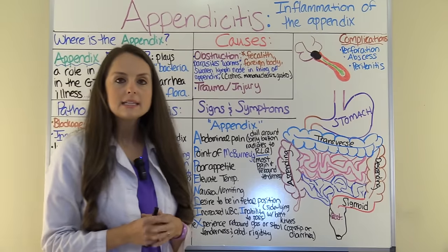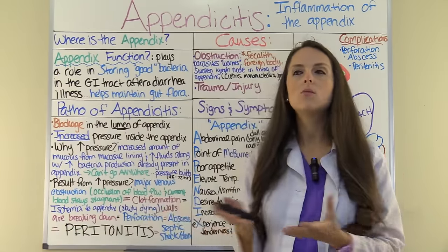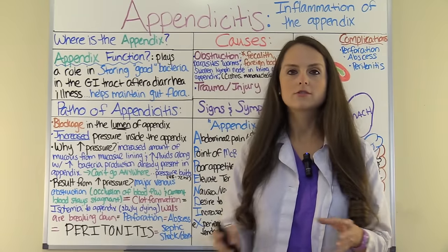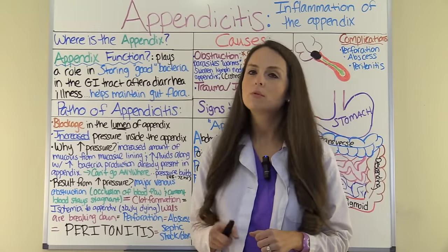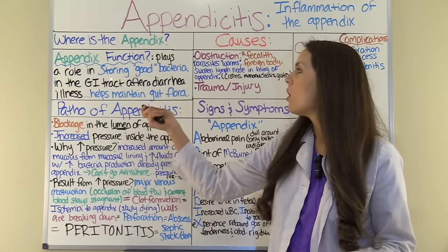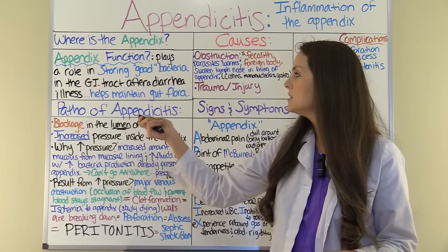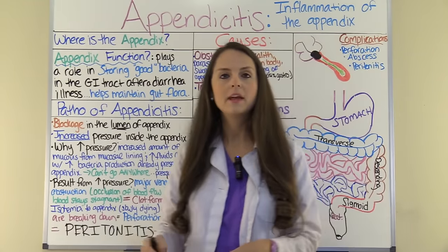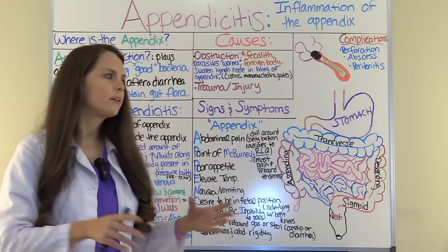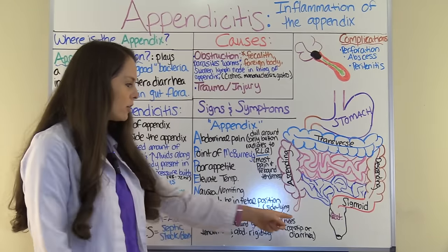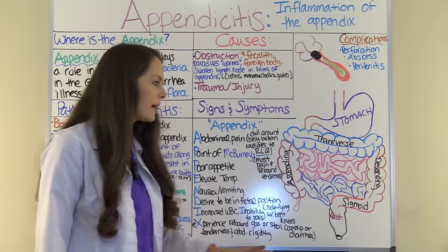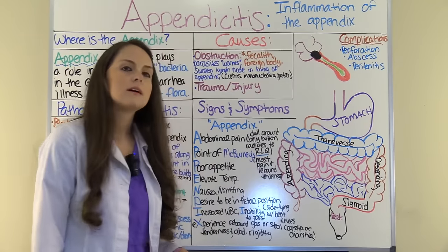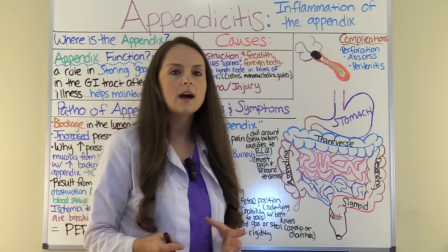What is the role of your appendix? For a while, scientists thought the appendix really didn't do anything — just one of those extra structures we have. But it actually has an important role. Its function is that it plays a role in storing good bacteria in the GI tract after a diarrhea illness. So it helps maintain healthy gut flora. You get sick, you have extreme diarrhea, those good bacteria congregate in the appendix until the coast is clear, then migrate out and repopulate the large intestine so you can have healthy gut bacteria.